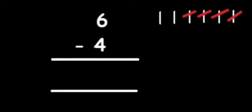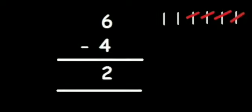Now we count the number of lines which are not cut — the answer is two. So six minus four is two. We draw six lines and cut four because we have to subtract four from six. The number of lines which are not cut is our answer. It's an easy method but it will need practice.